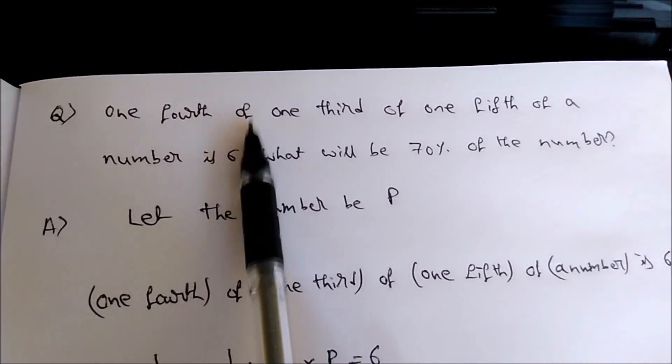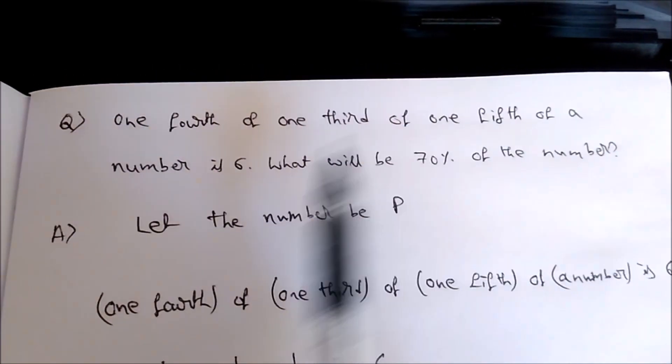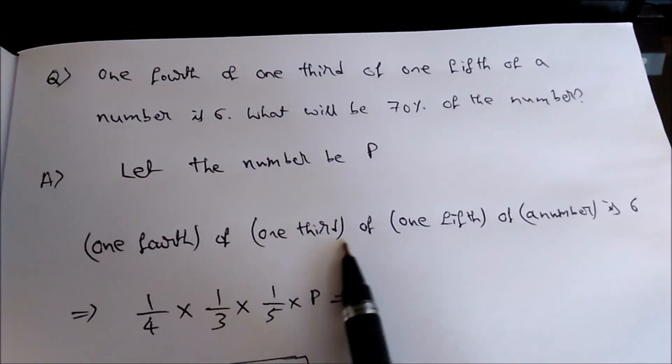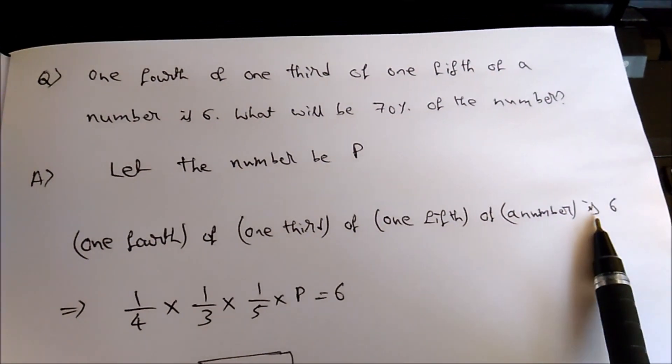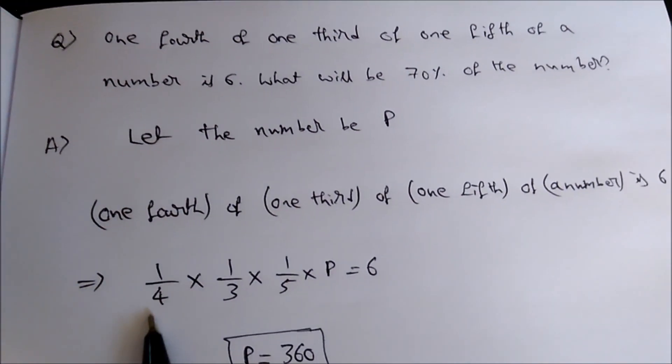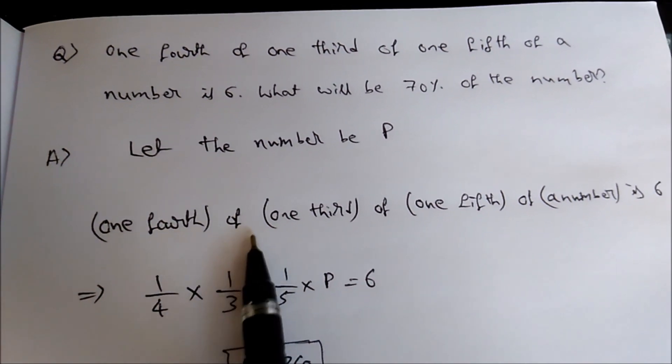The statement: one-fourth of one-third of one-fifth of a number is 6. One-fourth means 1 by 4. 'Of' means, as I said, multiplication.